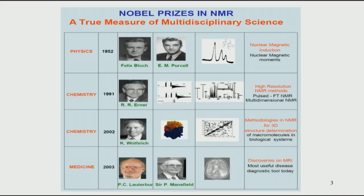A major use of NMR is in the area of imaging. The Nobel prize in 2003 was awarded to Peter Mansfield and Paul Lauterbur for similar contributions to MRI. MRI basically involves imaging of the whole body of a human or animal, capturing the anatomy of the human system. You can see the huge range of applications NMR has — from physics to chemistry and biology and imaging.